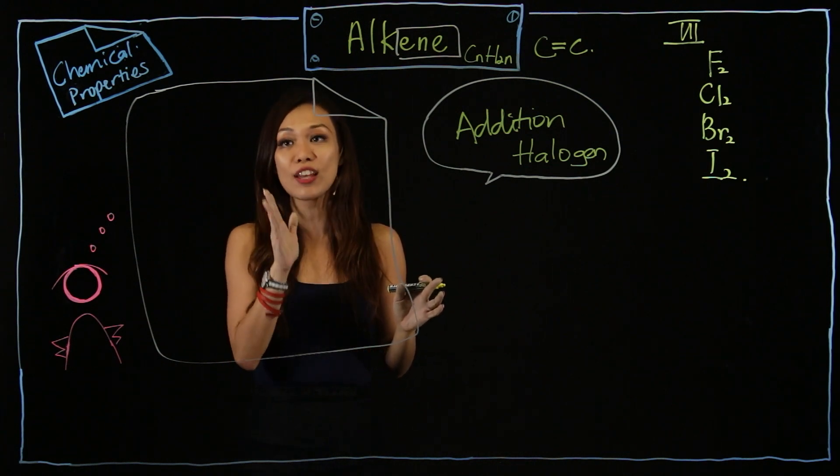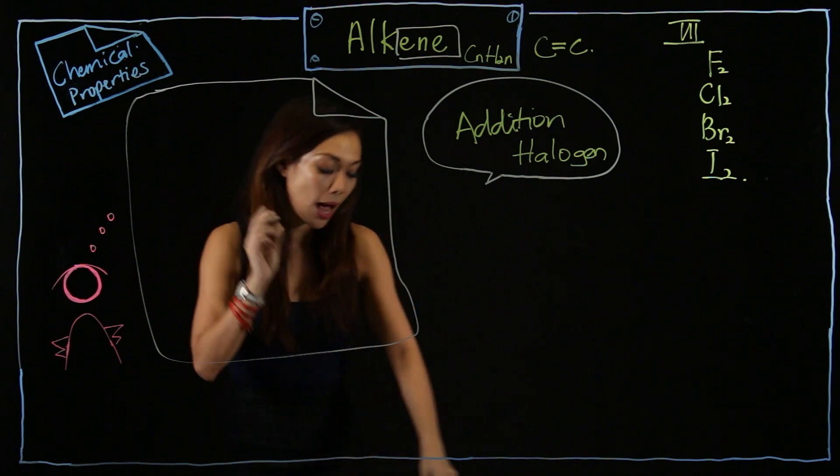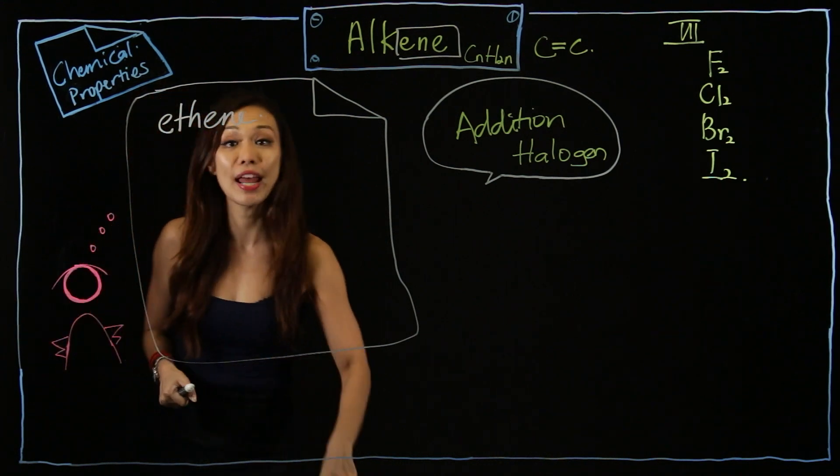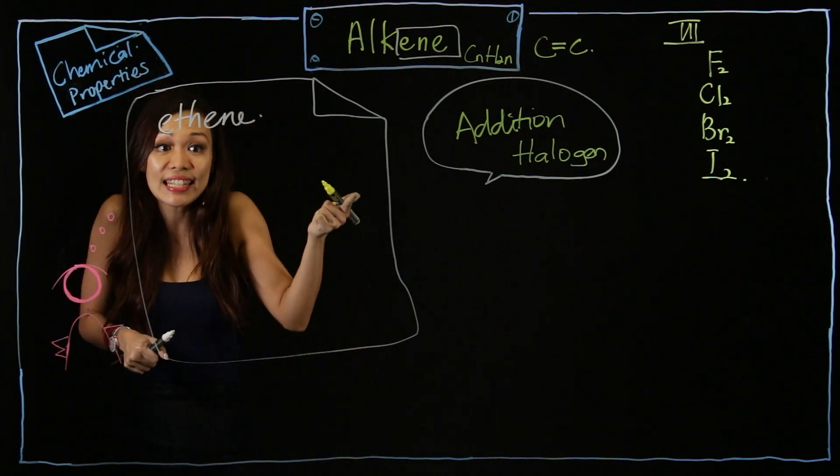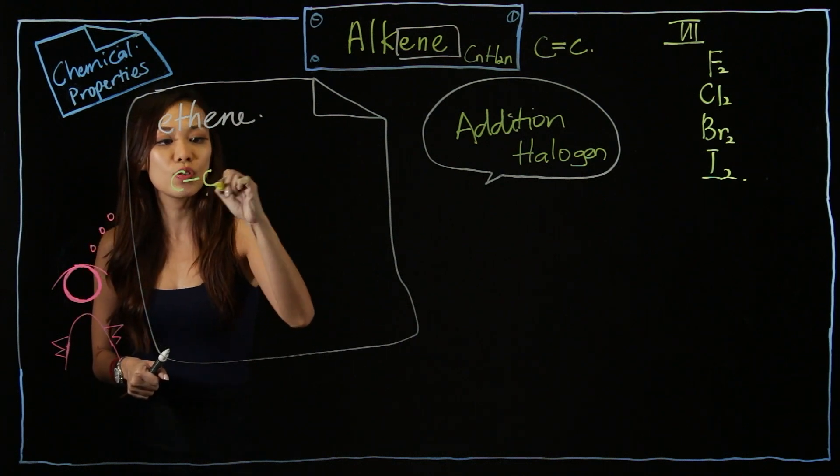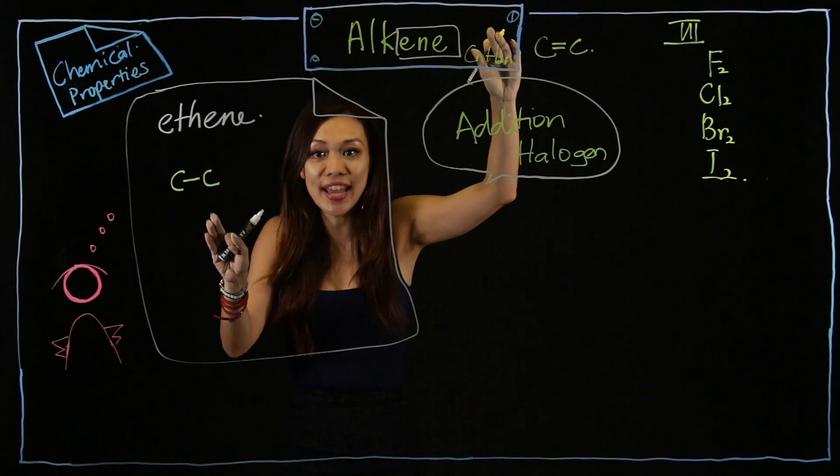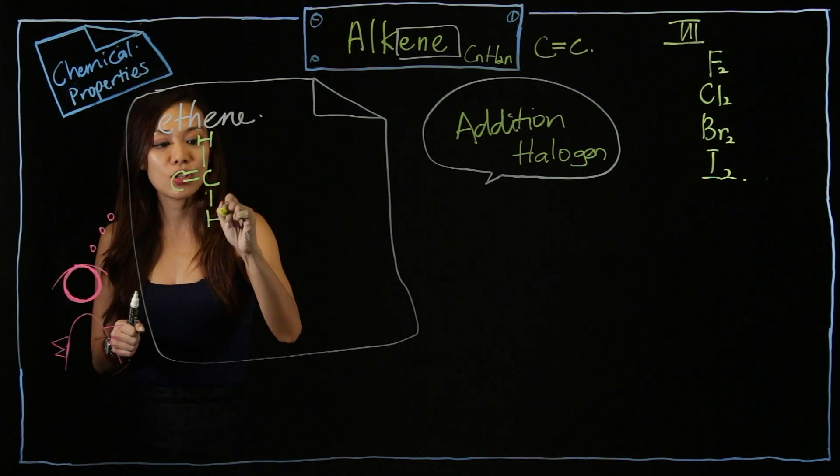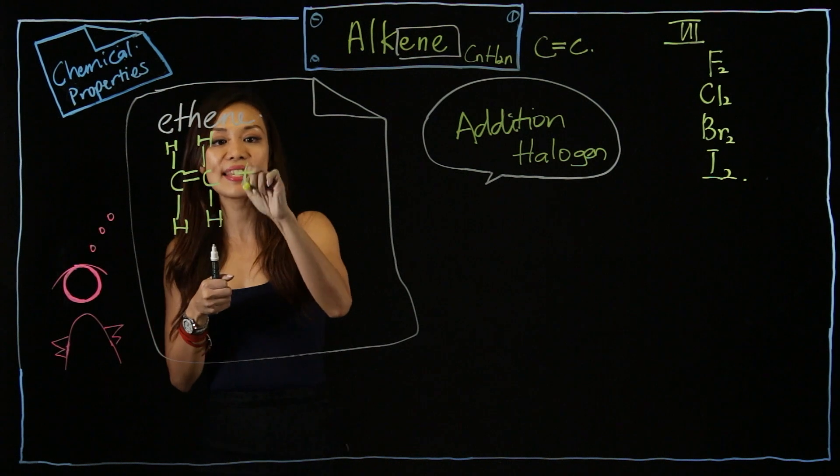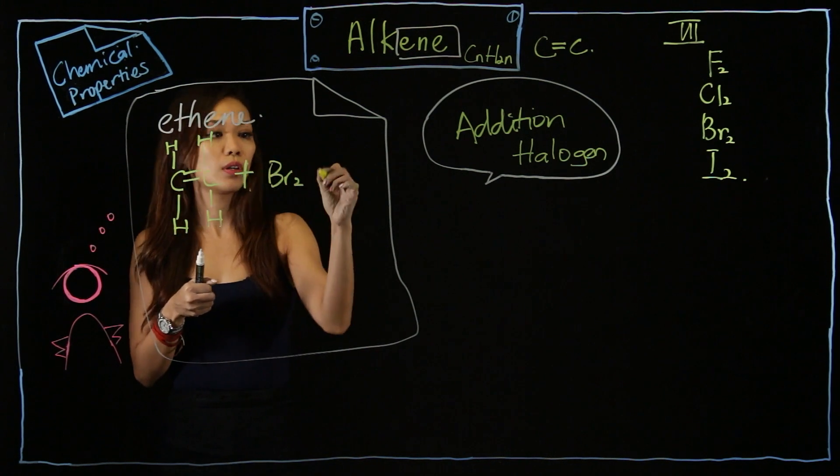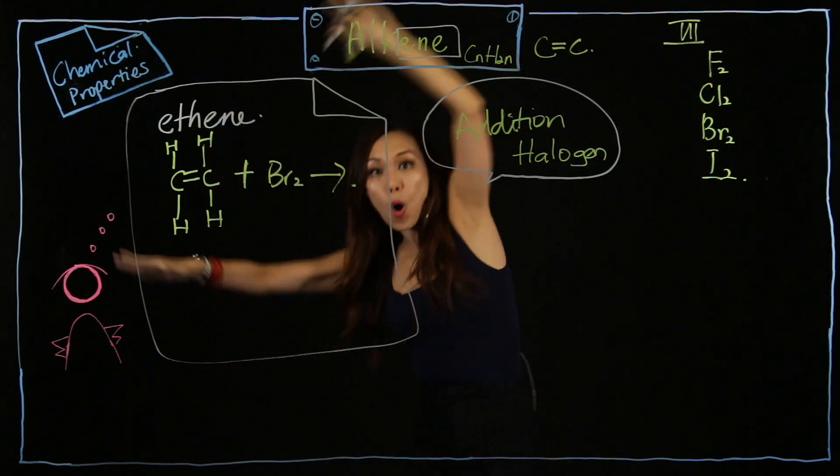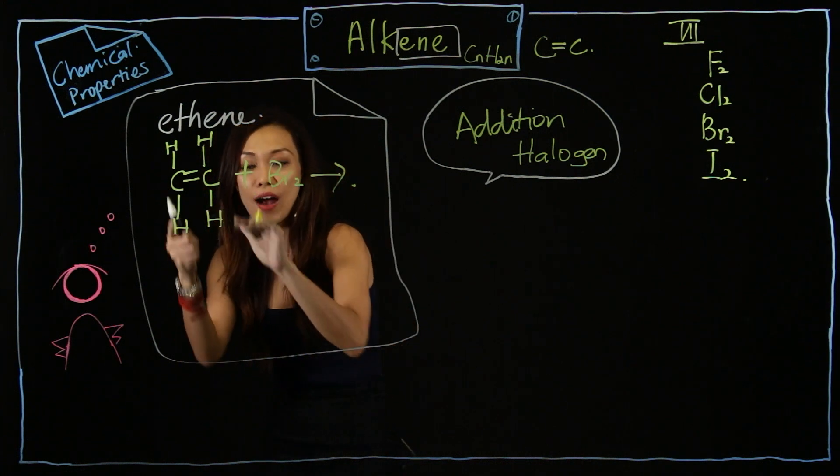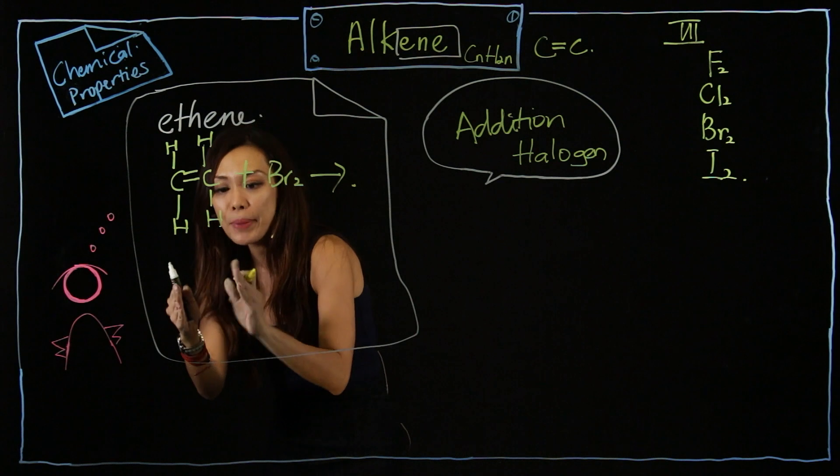But of course, let us use one example. So, the first example I'm going to use is ethene. So, let's draw out ethene. Ethene is monkey eat, so it's 2C. 1C, 2C. And what makes alkene special, let's recall again, is your double carbon bond. So, double carbon bond.